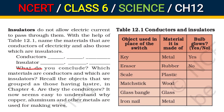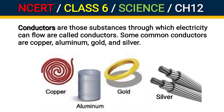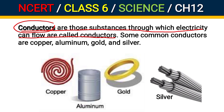What do you conclude? Which materials are conductors and which are insulators? Materials through which electricity can flow are called conductors. Conductors are substances or materials or metals through which electricity flows.